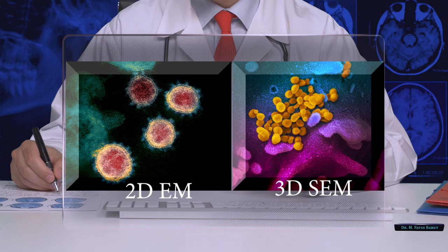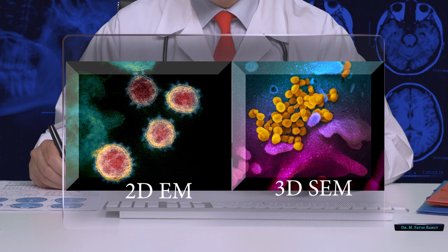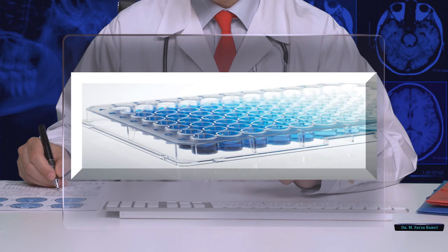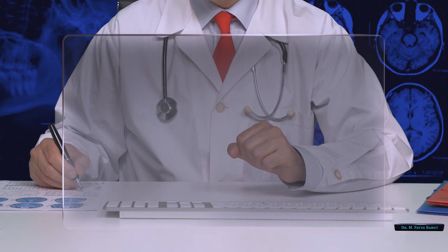After this process, to be sure that we protected the capsid, antigenic part of the virus, two methods can be used. Using 2D and 3D electron microscopes, we can get picture of the radiated virus and check whether we could keep 3D confirmation of the virus.